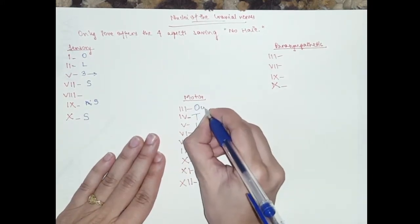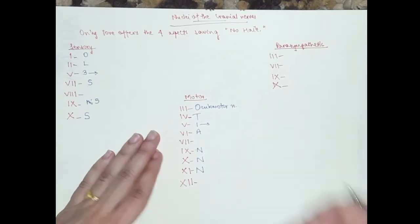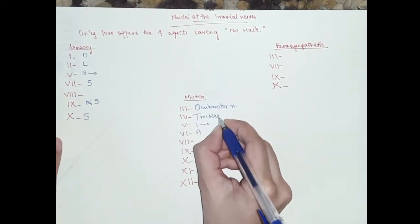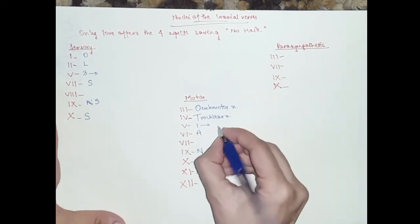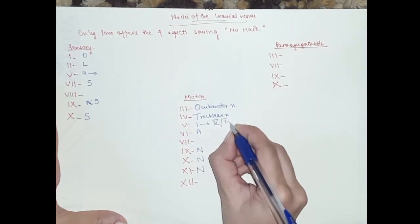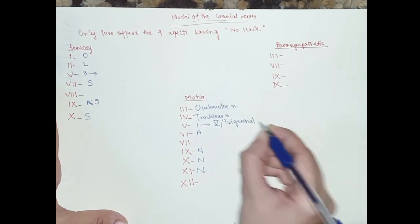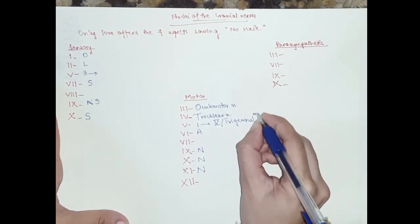Three is oculomotor, so it would be the oculomotor nucleus. Four is trochlear, so it's the trochlear nucleus. They're all motor. Number five is the trigeminal motor nucleus.